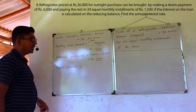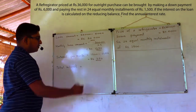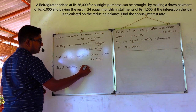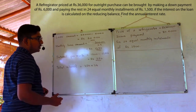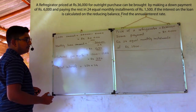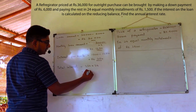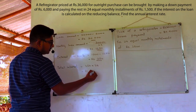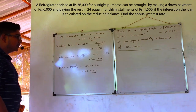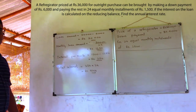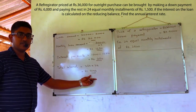If we multiply this monthly interest by the number of months — 24 — we will get the total interest to be paid. The total interest for this question is 6000 rupees.